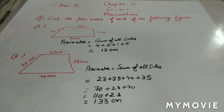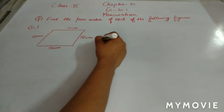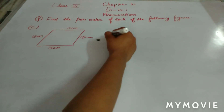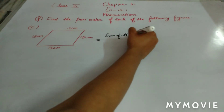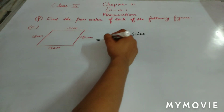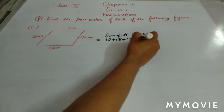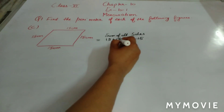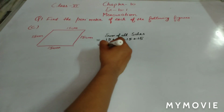Now we move on to part c. In this figure, all the sides are equal. So we do sum of all sides: 15 plus 15 plus 15 plus 15. That gives us 30, then 45, and 45 plus 15 is 60 cm.